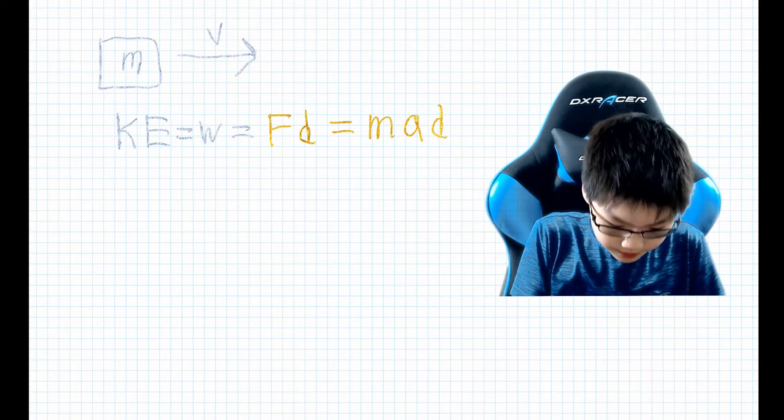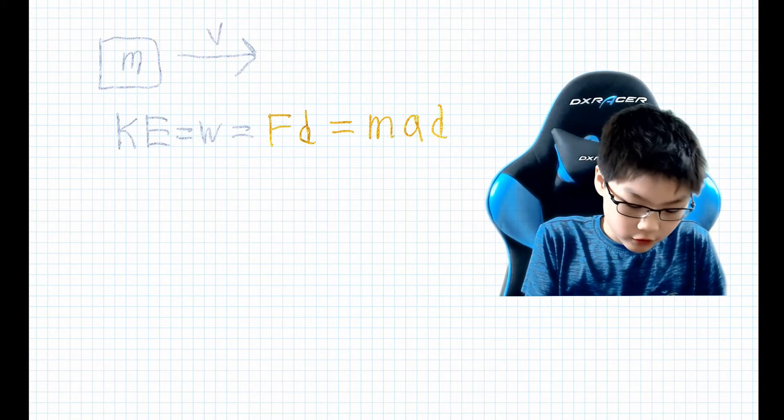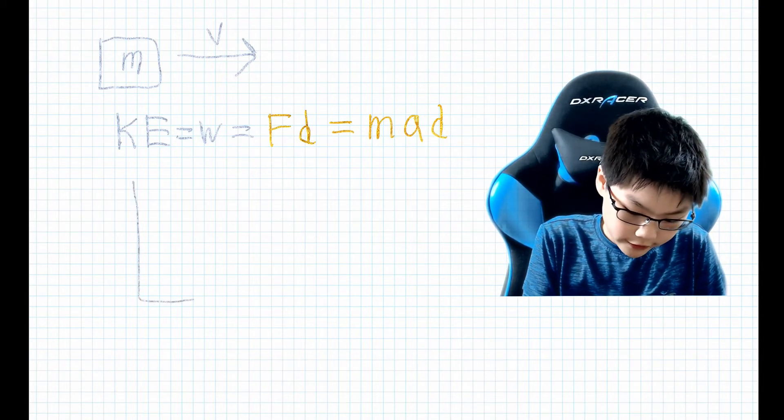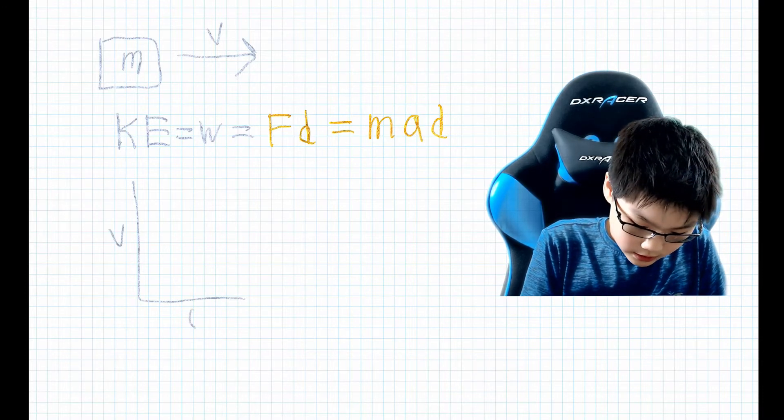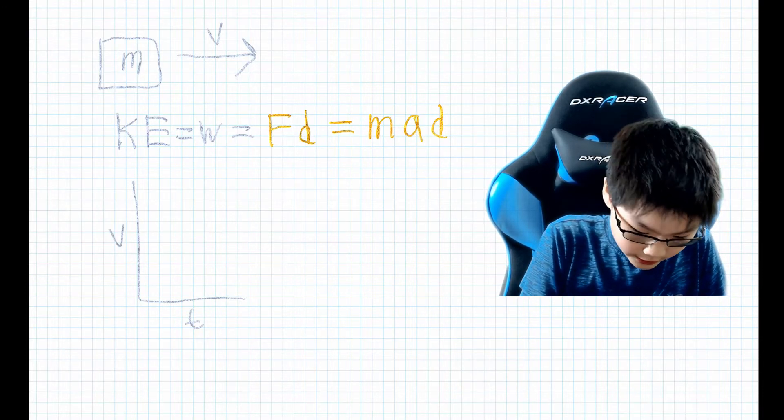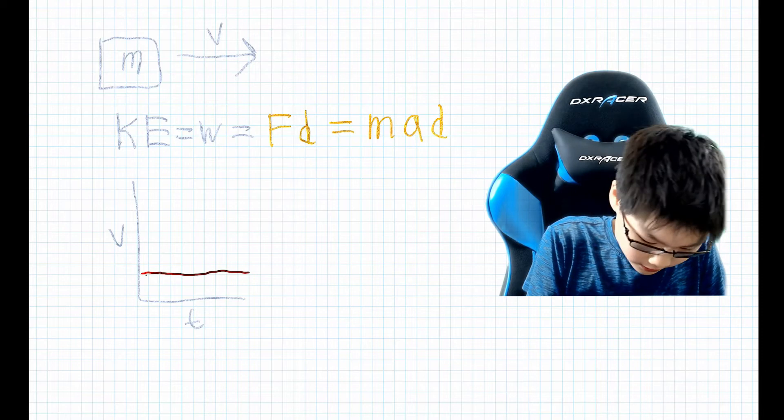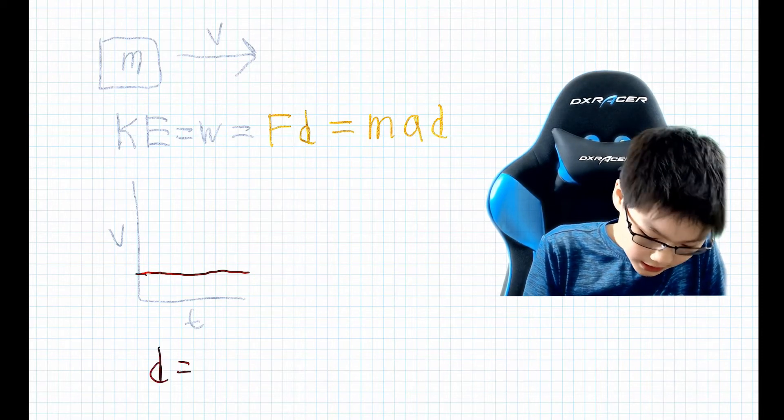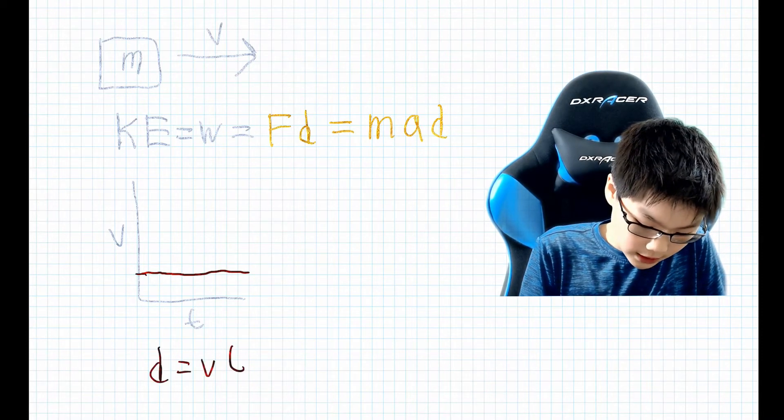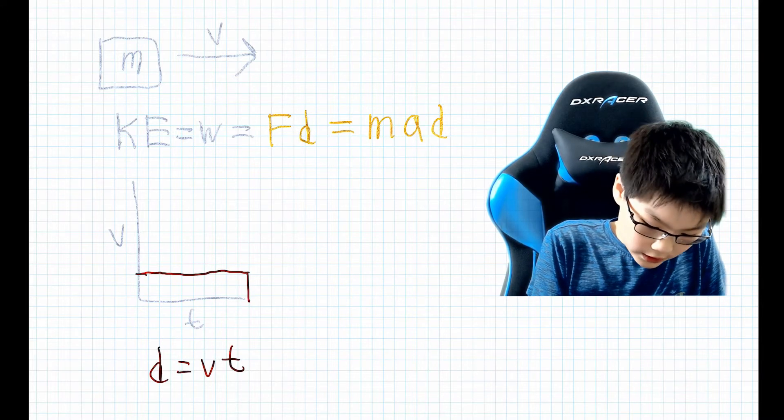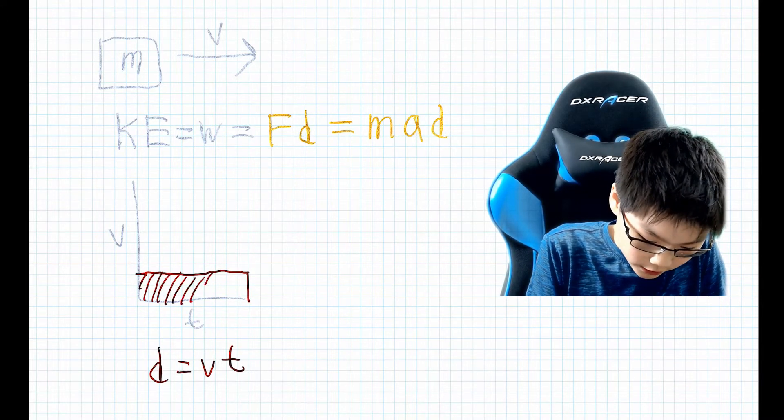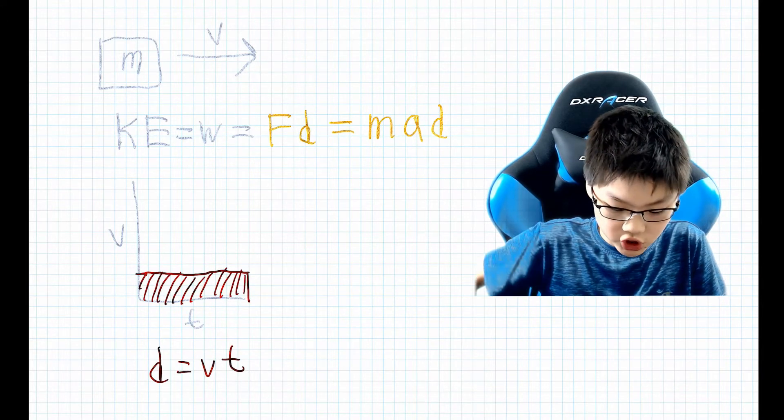So supposing we have constant velocity, I'm making a plot of that right now. The distance is simply going to be equal to the velocity times time, or the area underneath the velocity line, which is this shaded rectangle.